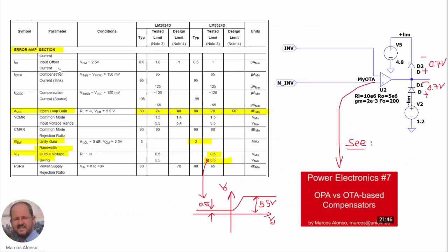Regarding the error amplifier section, we will use an operational transconductance amplifier — an OTA — that we developed in a previous video. You can see how to develop this component in the video 'Power Electronics Number 7: OPA versus OTA Based Compensators,' where we showed how to implement exactly this error amplifier for the case of the LM3524 circuit.